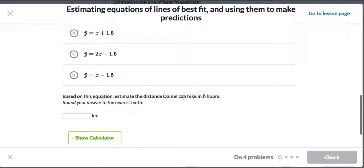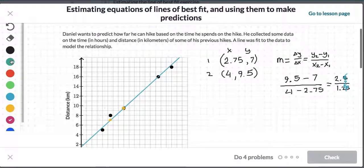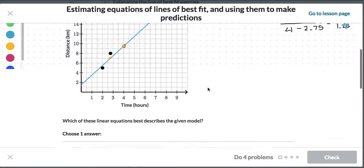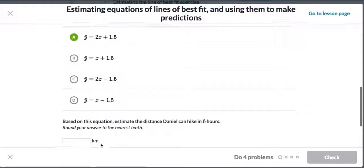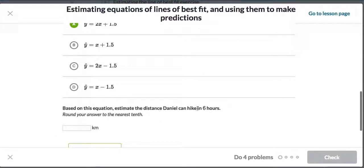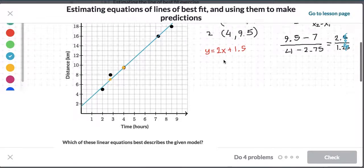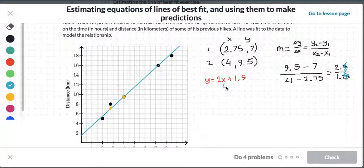And what's the distance Daniel can hike in 6 hours? So what we have to do here is we have to take our equation, y equals 2x plus 1.5, so our equation y equals 2x plus 1.5, and we need to plug in the value x based on the 6 hours that we have here. So the distance Daniel can hike in 6 hours, and we have to plug in 6 hours into our equation. So that's giving us, therefore...